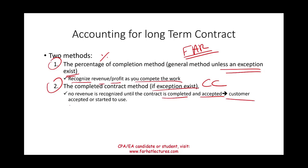Which method does the taxpayer prefer? The taxpayer would prefer the completed contract method because it defers paying taxes until the project is done. The IRS, however, prefers the percentage of completion method because they want their tax revenue as you complete the project. The completed contract method is the exception — everything defaults to percentage of completion unless an exception exists.